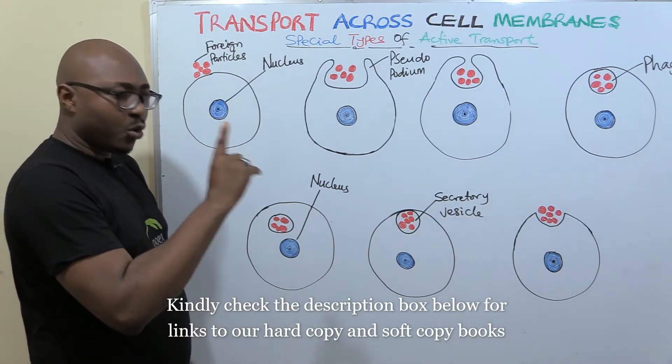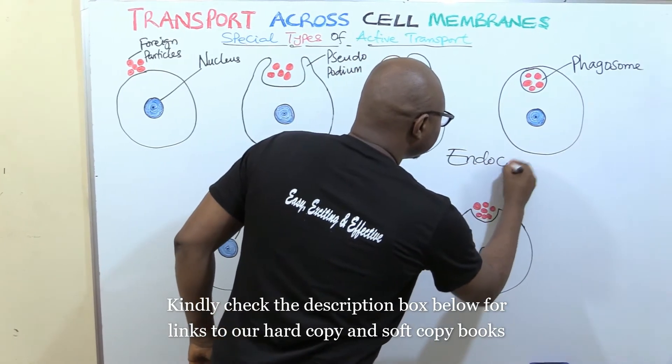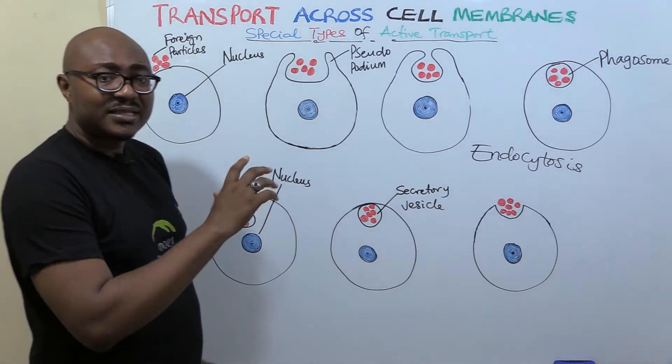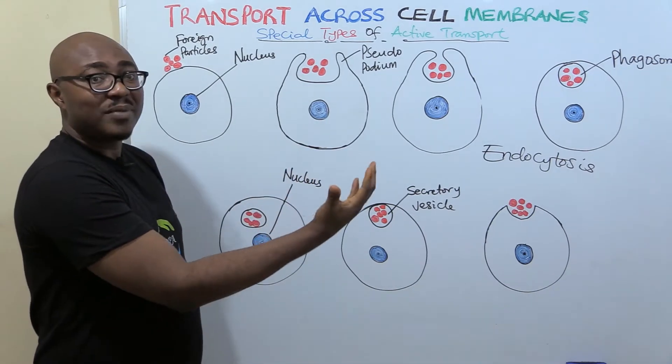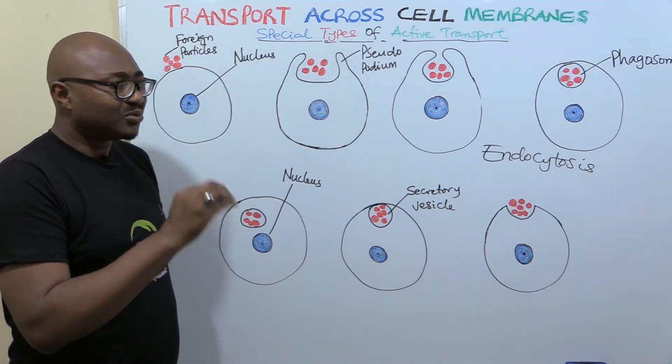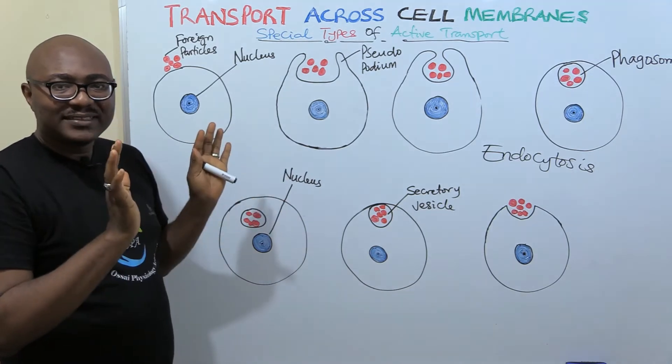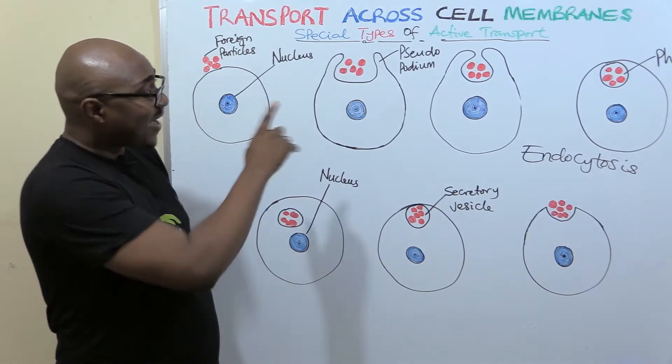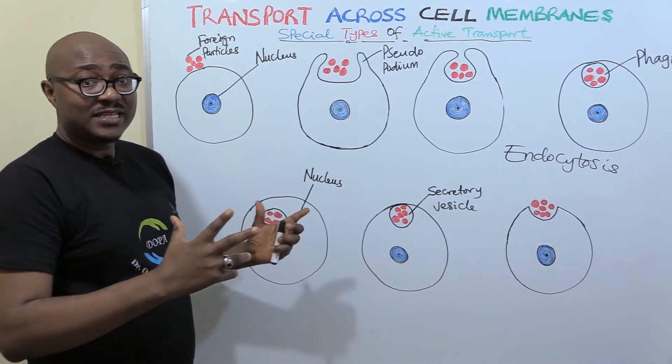Let's just go straight into it. Now there are two types represented by these two diagrams here. One of them is called endocytosis, represented by this upper diagram. Endocytosis simply means taking in, taking particles from outside in. And these particles are too large, macromolecules that are too large to pass through.